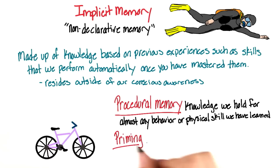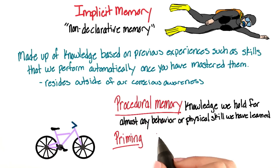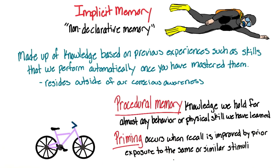Priming is another type of implicit memory. Priming occurs when recall is improved by prior exposure to the same or similar stimuli. In fact, memory is better for information that relates to prior knowledge.